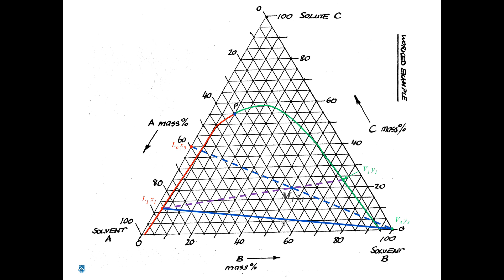This time we are unable to find Z2 directly. However, what we do know — and what we are told in the problem — is that our final raffinate has 5 weight percent C. All of our raffinates sit on this red line, and 5 weight percent read off the C axis is located here.